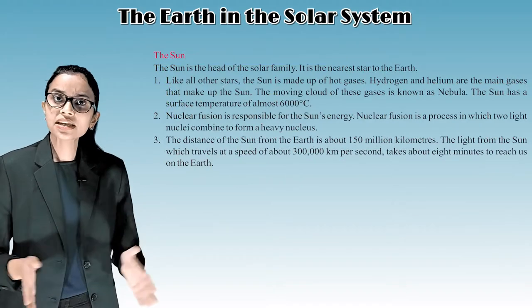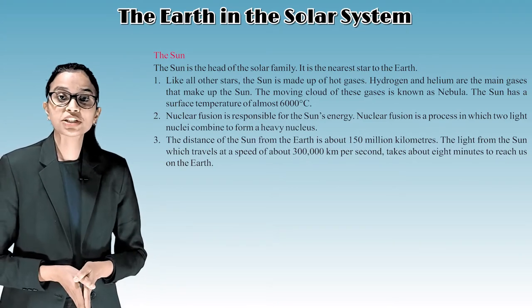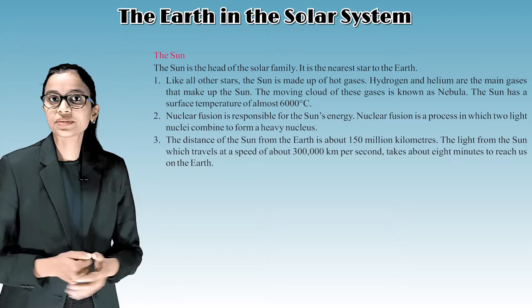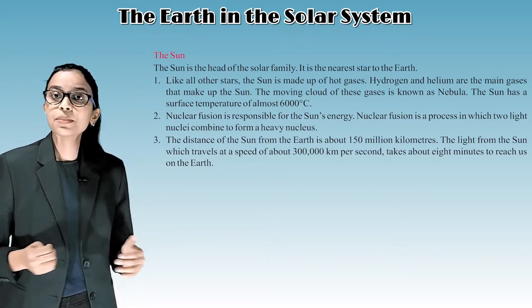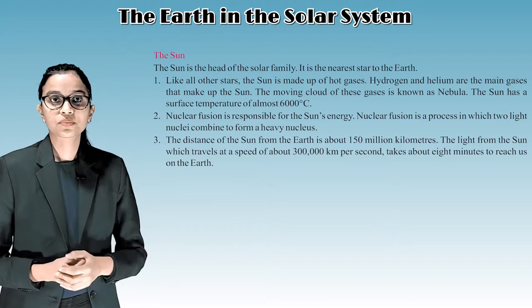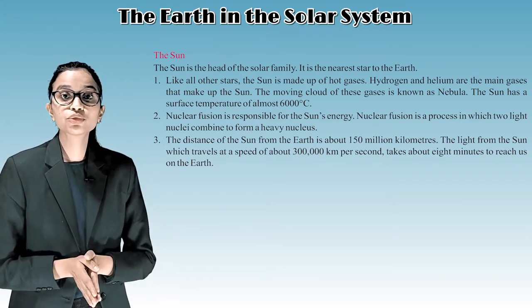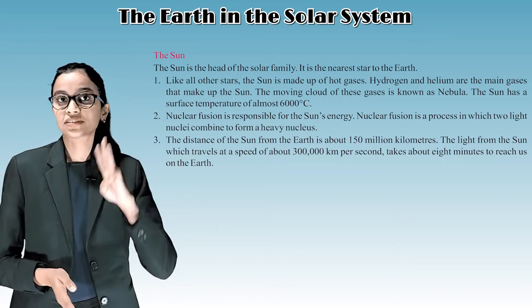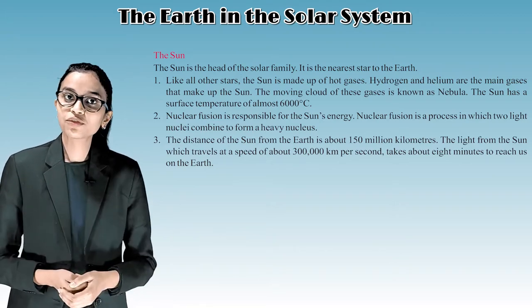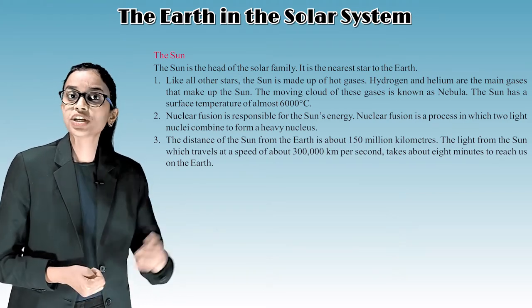The sun. The sun is the head of the solar family. It is the nearest star to the earth. First, like all other stars, the sun is made up of hot gases. Hydrogen and helium are the main gases that make up the sun. The moving clouds of these gases is known as nebula. The sun has a surface temperature of almost 6,000 degrees Celsius. Second, nuclear fusion is responsible for the sun's energy. Nuclear fusion is a process in which two light nuclei combine to form a heavy nucleus. Third, the distance of the sun from the earth is about 150 million kilometers. The light from the sun, which travels at a speed of about 300,000 kilometers per second, takes about 8 minutes to reach us on the earth.